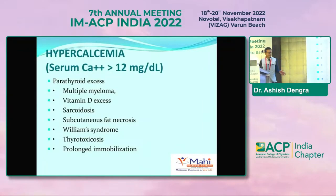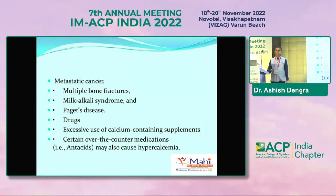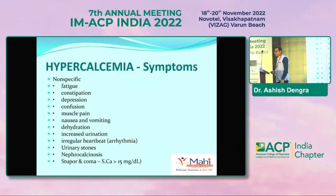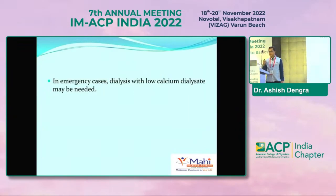Hypercalcemia - calcium more than 12 mg/dL - can be seen in multiple myeloma, vitamin D toxicity, thyrotoxicosis, sarcoidosis, metastatic cancer, Paget's disease, and antacids containing calcium. Symptoms can be fatigue, constipation, muscle pain, nausea, increased urination, or nephrocalcinosis. Treatment includes forced saline diuresis with furosemide and bisphosphonates for malignancy patients. In emergency cases, dialysis is the last option.